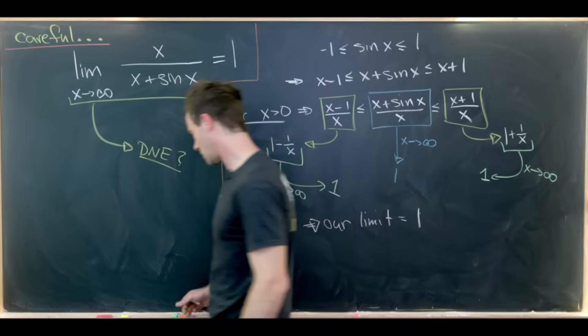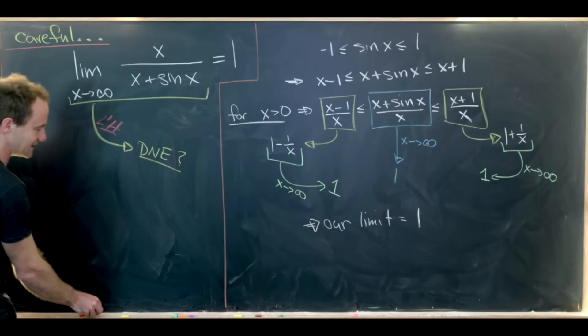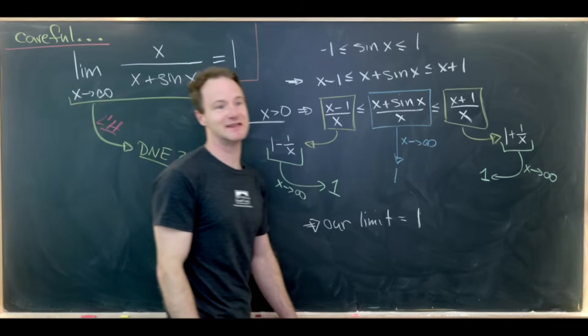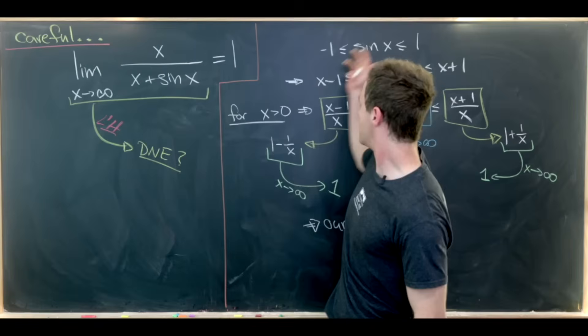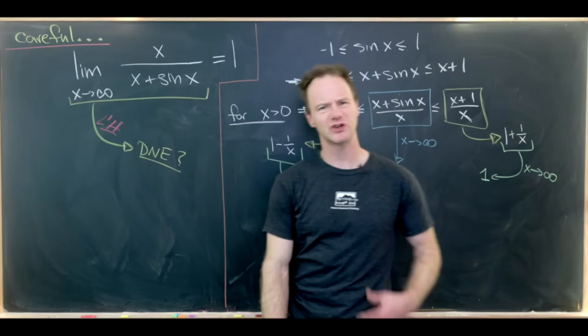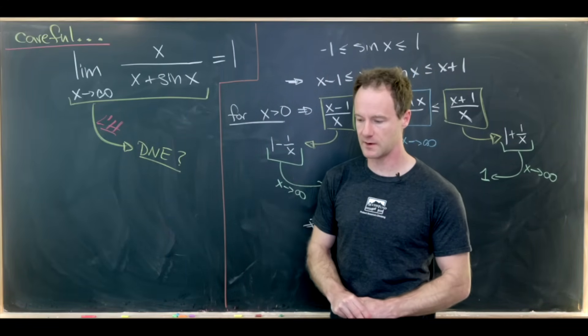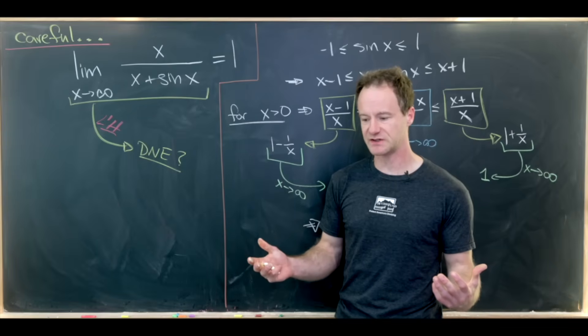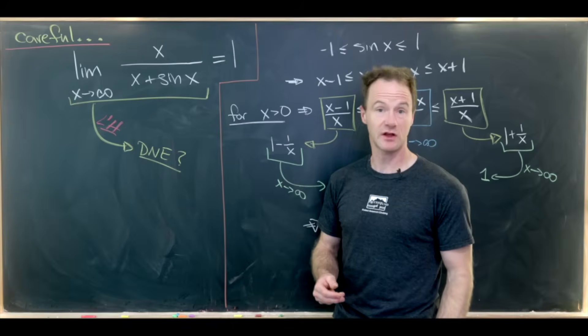So we've got L'Hopital's rule. Let's recall that L'Hopital's rule seemed to say that this limit did not exist, whereas this squeeze theorem argument, which seems more airtight, shows that this limit is equal to 1. So the big question is what went wrong. So let's maybe look at that.